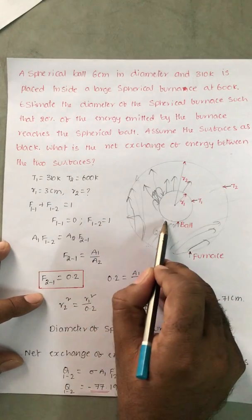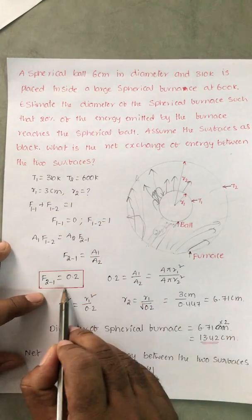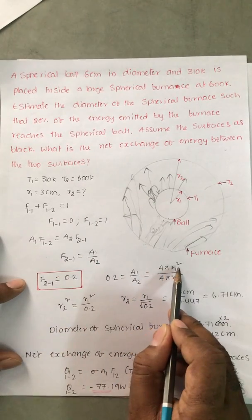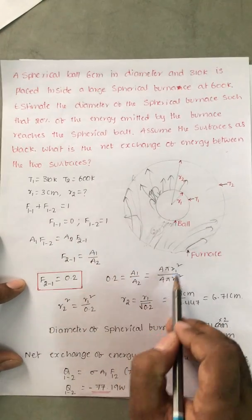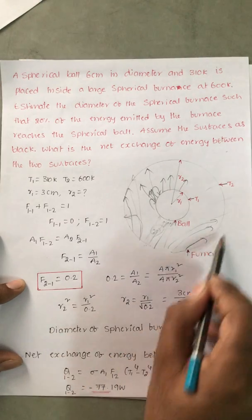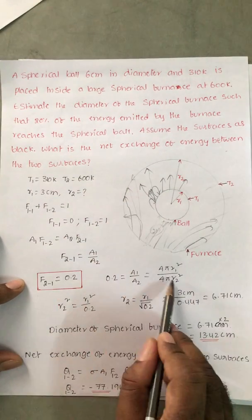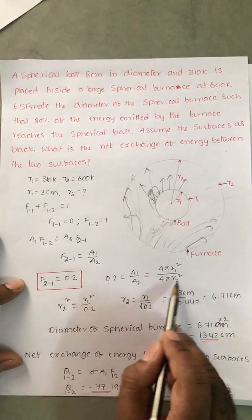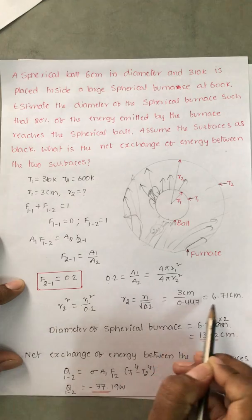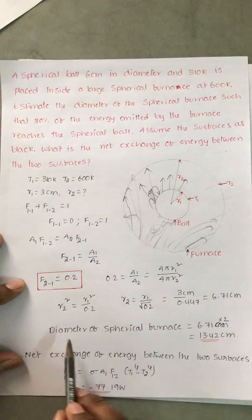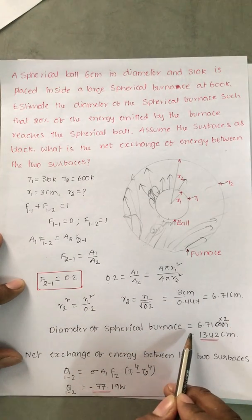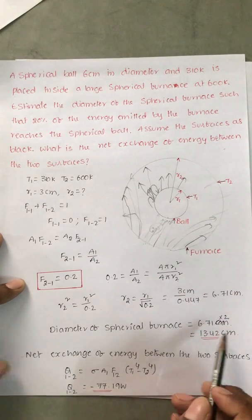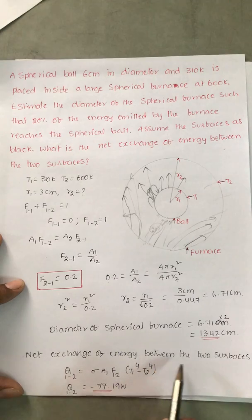So 0.2 equals A1 by A2. The area of a sphere is 4πR², so A1 is 4πR1² and A2 is 4πR2². Equating these, we solve for R2 and get R2 = 6.71 cm. Therefore the diameter of the spherical furnace is 2 × 6.71 = 13.42 cm.